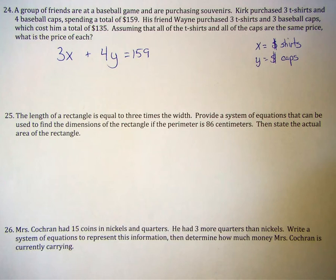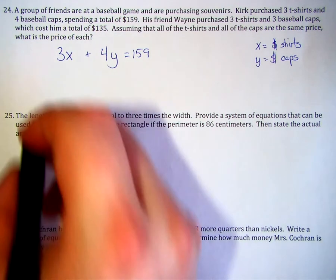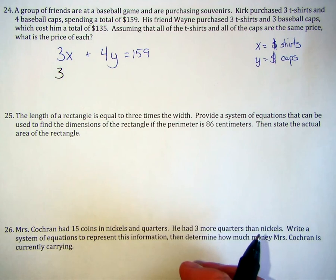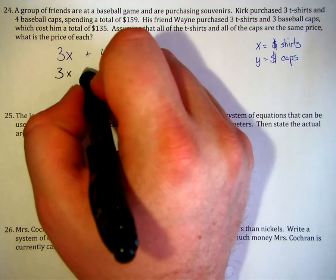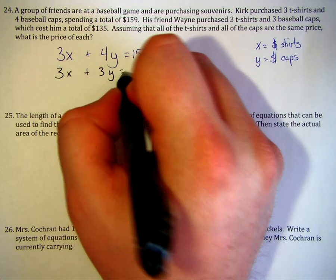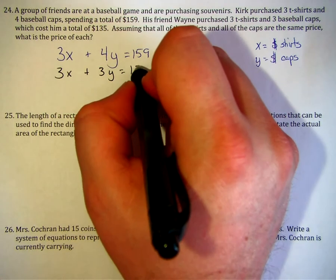That brings us then to our second statement. His friend Wayne purchased three t-shirts. Again, we don't know how much, but we're going to assume the same cost of a t-shirt. And he bought three caps, but this friend spent $135.